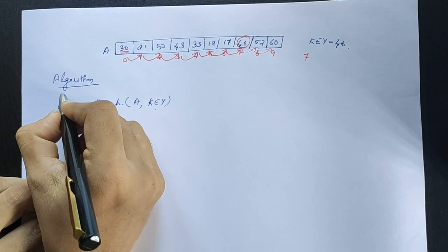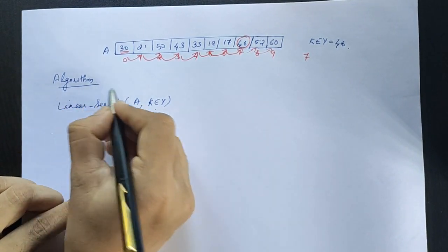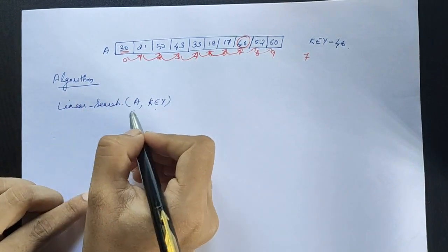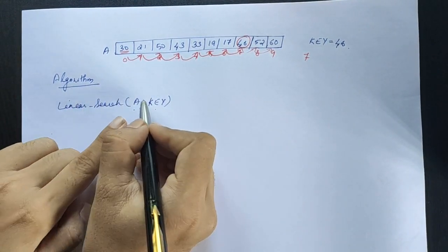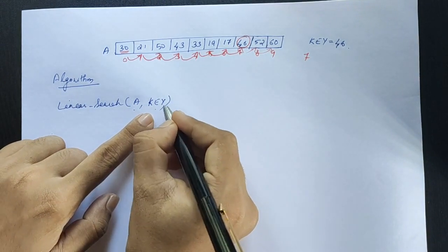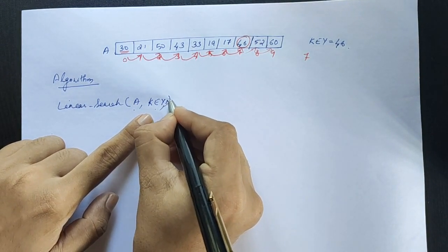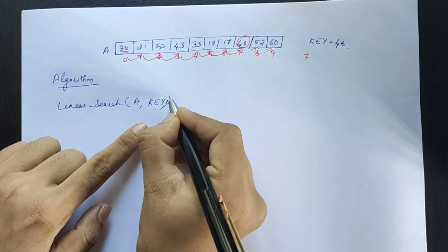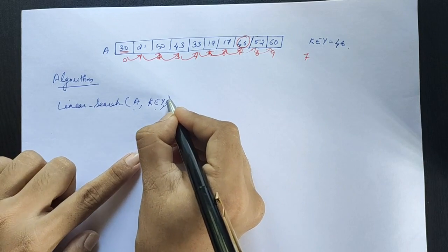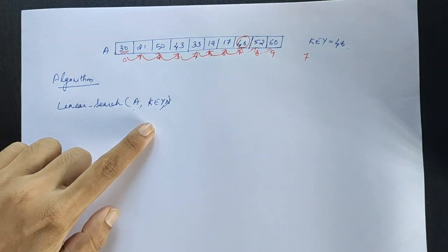In the algorithm, 'a' is the array to search, 'key' is the key value or search argument, and 'n' is the size of the array — the number of elements.